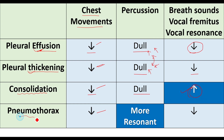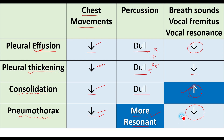In pneumothorax the chest movement is decreased on the affected side, but percussion is more resonant on that side. As discussed previously, hyper resonance is a bit difficult to detect compared to dullness — it is something you learn with practice. The breath sounds, vocal fremitus, and vocal resonance are all decreased in pneumothorax.